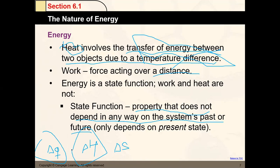Energy is a state function, so it does not depend on the past or future — only the present state. That means I can define the energy of an object as a single value, like 10 kilojoules. But with enthalpy, you always have to compare initial and final enthalpy — you always have to consider a process.